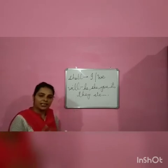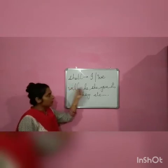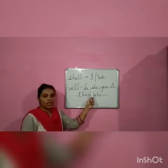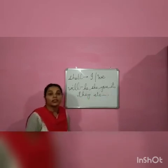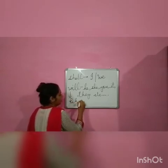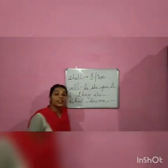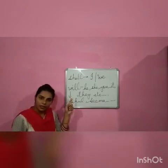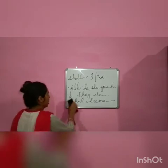Ke shall or will ko kahaan kis kis saath use kia jaata hai. Remember, shall is always used with I and We, and will is always used with he, she, you, it, they, and other subjects also. With names also we use will — like Rahul, Seema. Naam ke saath bhi hum will ka use karte hain. So this is the usage of shall and will.